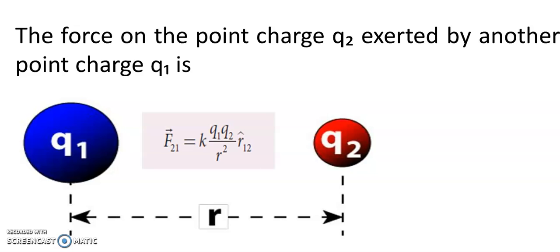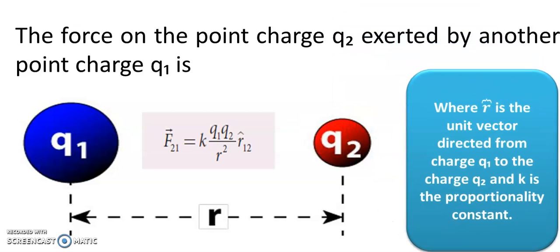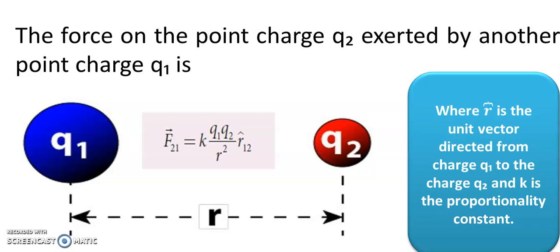K is the proportionality constant. Since force is directly proportional to the product of the two charges and inversely proportional to the square of the distance between them, in order to remove the proportionality symbol we introduce the proportionality constant K. R cap is the unit vector directed from charge Q1 to charge Q2, and K is the proportionality constant.